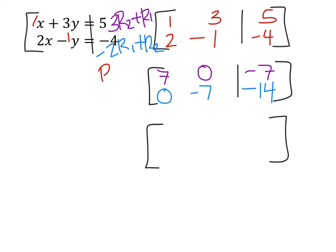So for row 1, I don't need to add or subtract anything to it. All I need is for this 7 to become a 1. So to do that, I would just take the 7 and I would divide it by 7.